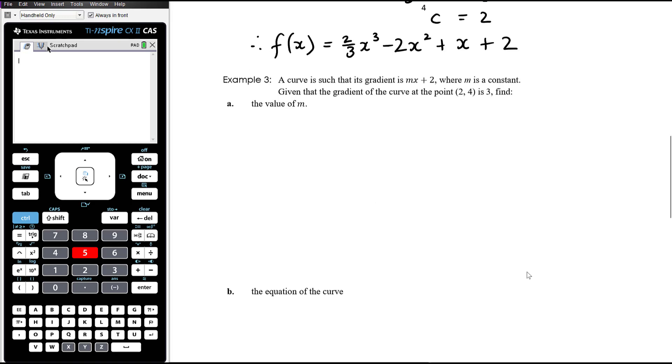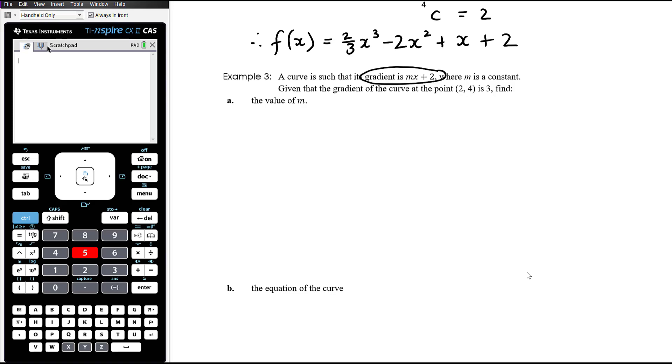Okay, so a curve is such that this is its gradient, therefore that's its derivative. So we know that the derivative of this curve is a linear function mx plus 2. So therefore this curve must be a quadratic function. The first part asks us to find the value of m. So we've got two bits of information here. We know that the gradient of the curve at the point (2, 4) is 3.